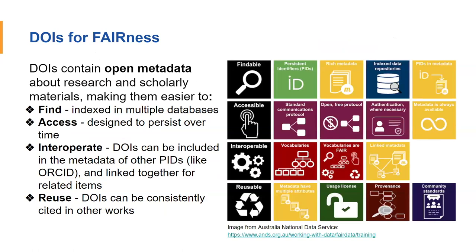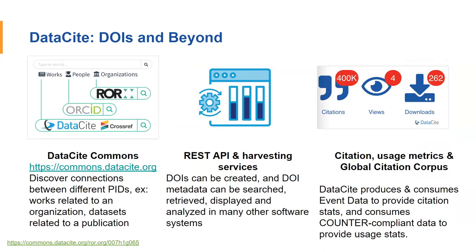This helps with the FAIR principles — Findable, Accessible, Interoperable, and Reusable — basically making sure that all research outputs out there are FAIR. DataSite is more focused on DOIs. If you haven't explored DataSite Commons, this is another illustration of how having different persistent identifiers connected and linked together in metadata can really help us put together a better picture — putting the puzzle pieces together in terms of understanding research activity across the landscape.